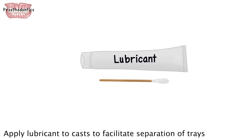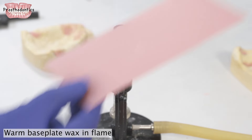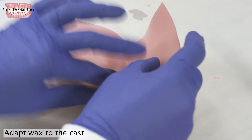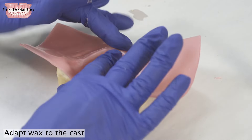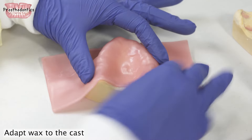Apply a lubricant such as Vaseline to the casts. Adapt one layer of wax over the diagnostic cast to create about one millimeter of tissue relief to allow for uniform space for the final impression material. Pass the wax sheet through the flame of the Bunsen burner until it is pliable, then adapt the softened wax sheet to the cast so that it is even without bubbles or irregularities.